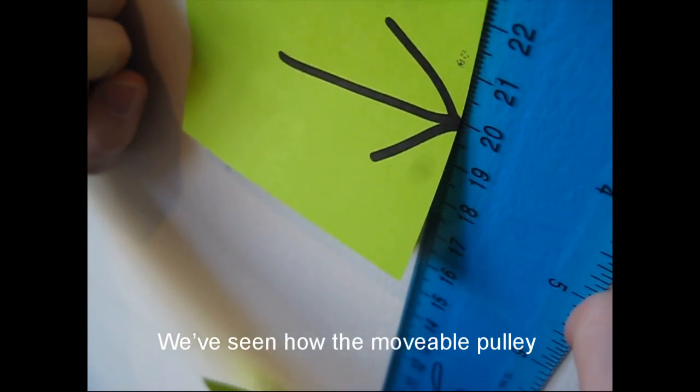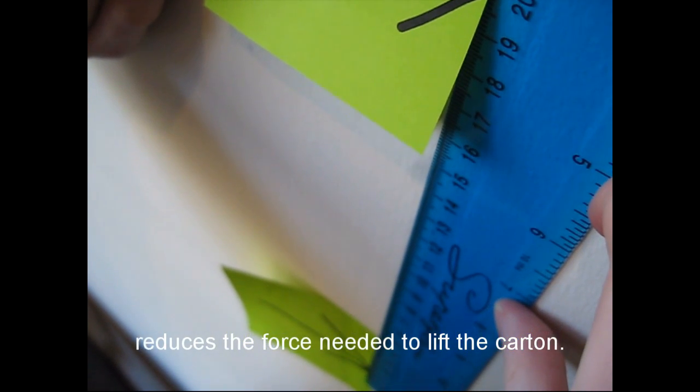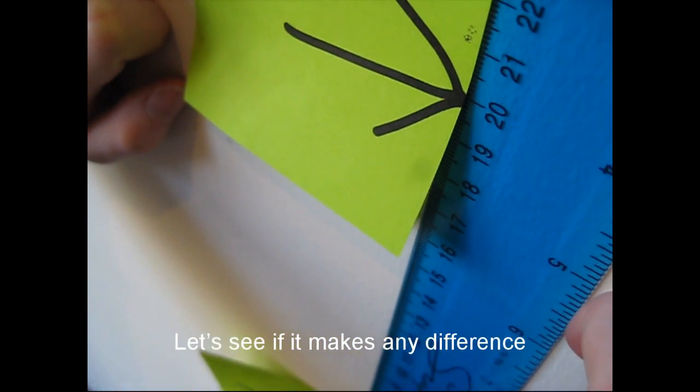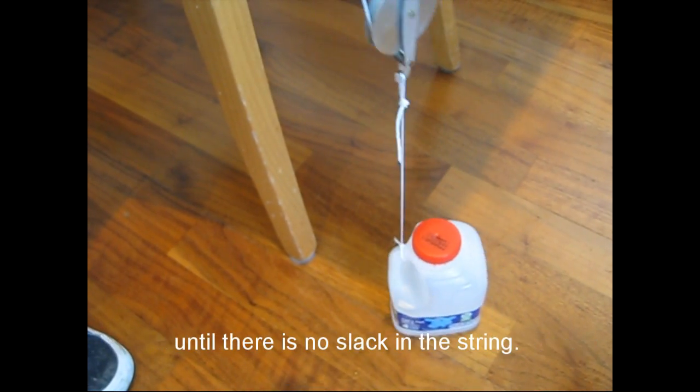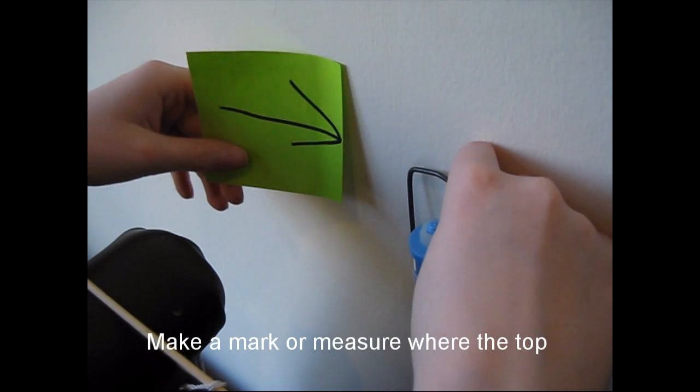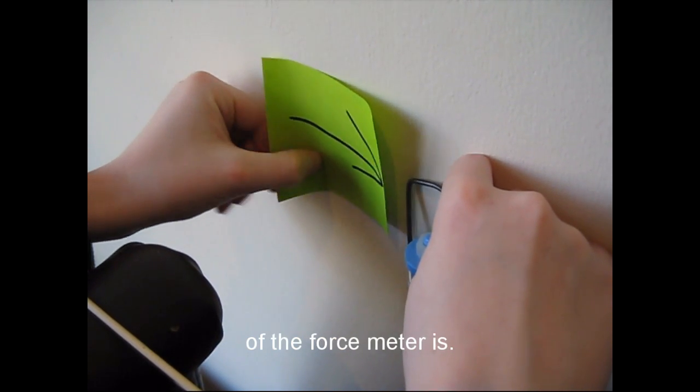We've seen how the moveable pulley reduces the force needed to lift the carton. Let's see if it makes any difference to how far the carton moves. With the carton on the ground, lift the force meter until there is no slack in the string. Make a mark or measure where the top of the force meter is.